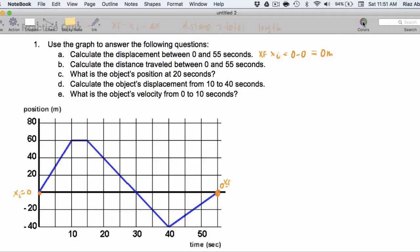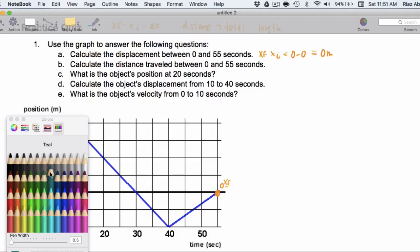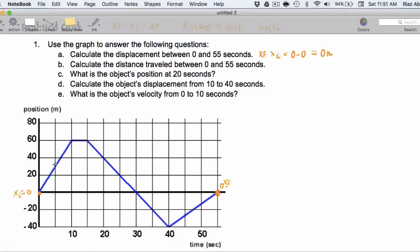Now, the distance traveled between 0 and 55 seconds, that's going to be a bit of a different number. So, in part B, we're going from 0 to 60. So, we're going a nice 60 meters. Then we travel 0 here. We go back from 60 to 0, so we cover another 60 meters. And we cover 40 going down to the negative 40 mark.